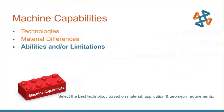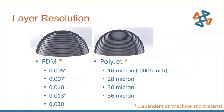Now let's look at abilities and limitations of the machines so we can plan for them in our design or overcome them. The first thing to look at is layer resolution. When you look at FDM and PolyJet, these are layers that are stacked up. For FDM, we can do everything from 5 thousandths of an inch layers up to 20 thousandths. If you need something quickly, 20 thousandths will get you that part fast. If you need good detail, 5 thousandths will get you that detail.